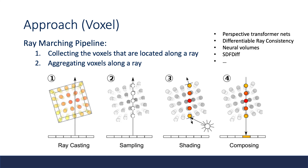Next, we show the rendering for voxels, which usually follows a ray marching pipeline. Related works include perspective transformer network, differentiable ray consistency, neural volumes, and SDF-Diff. It first casts rays and collects the voxels located along the ray, then computes activations on those voxels and composes the activations along the ray.